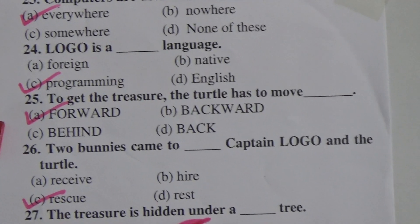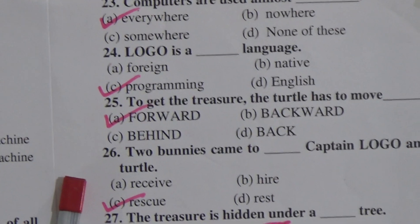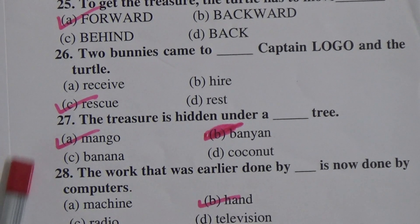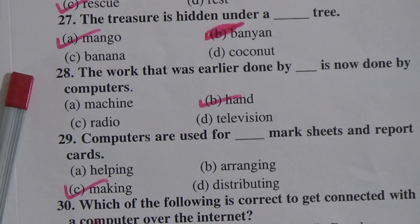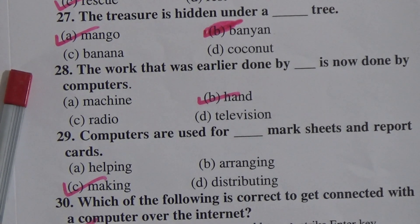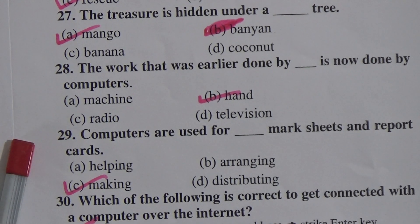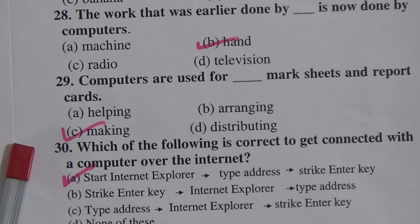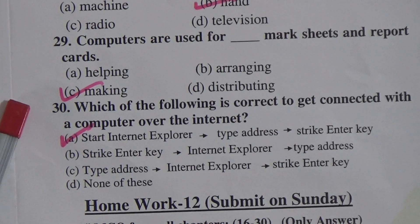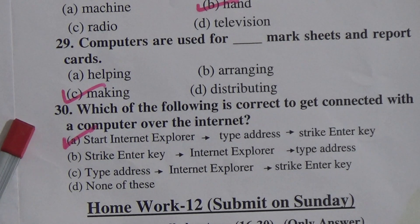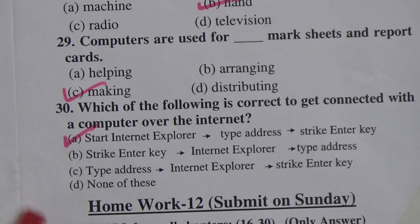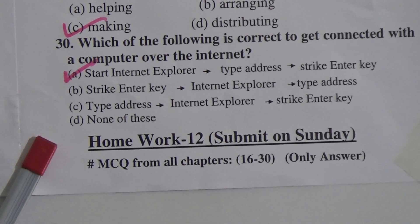Question 25: To get the treasure, the turtle has to move forward. Question 26: Two bunnies came to rescue Captain Logo and the turtle. Question 27: The treasure is hidden under a mango tree. Question 28: The work that was earlier done by hand is now done by computers. Question 29: Computers are used for making mark sheets and report cards. Question 30: To get connected with a computer over the internet — start internet explorer, type address, and strike enter key.